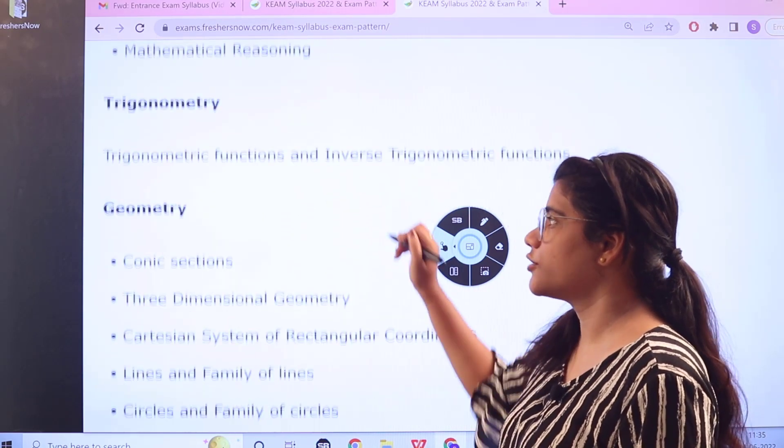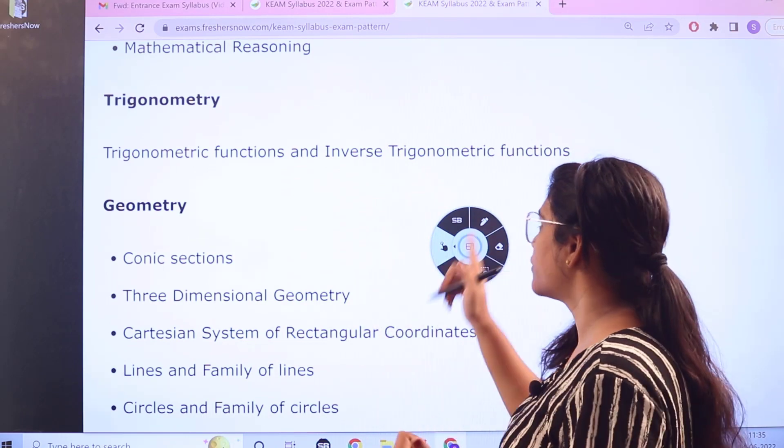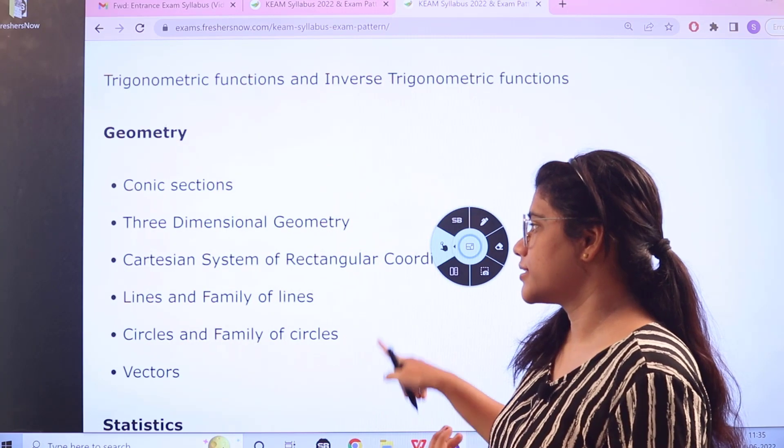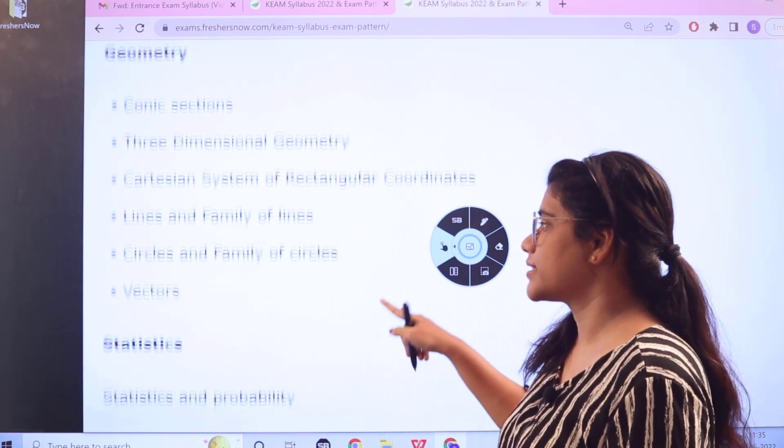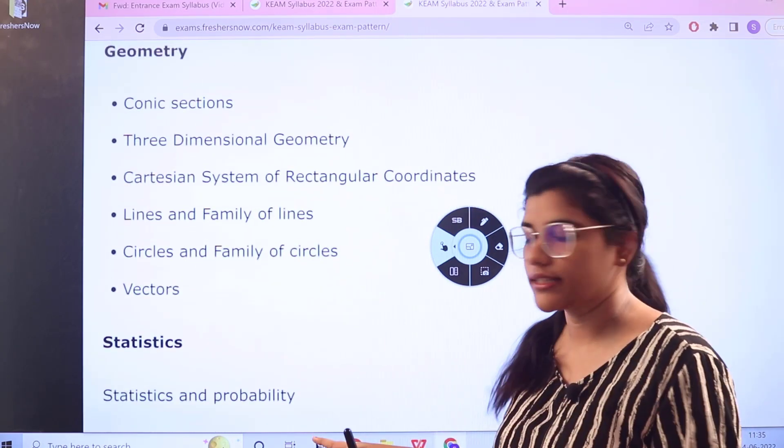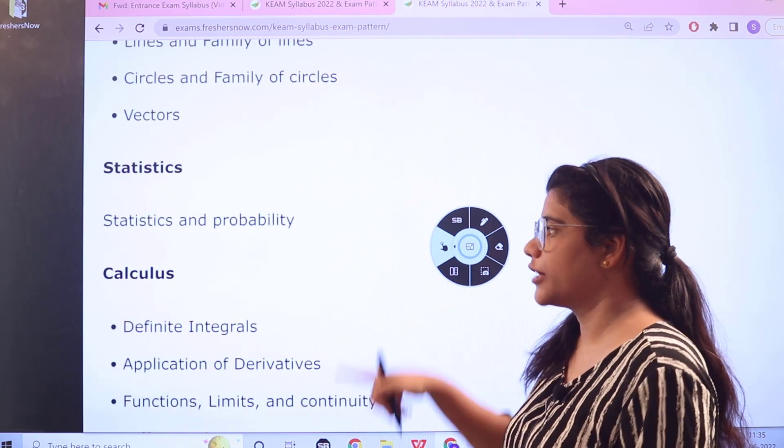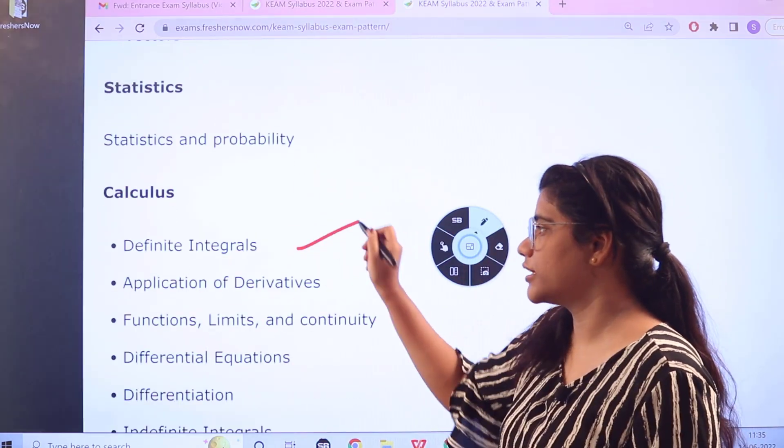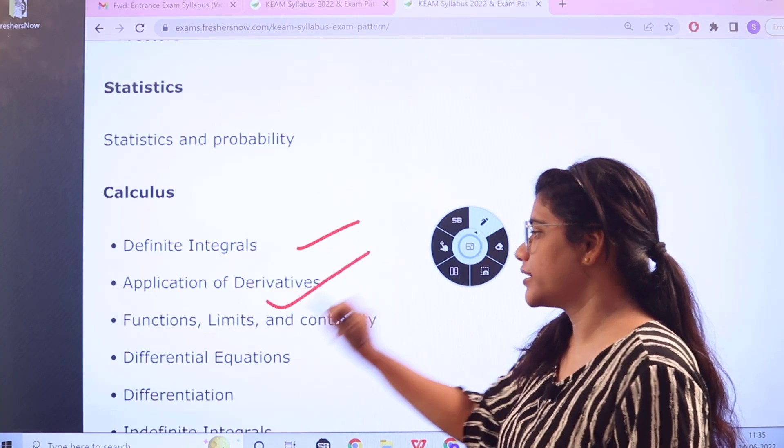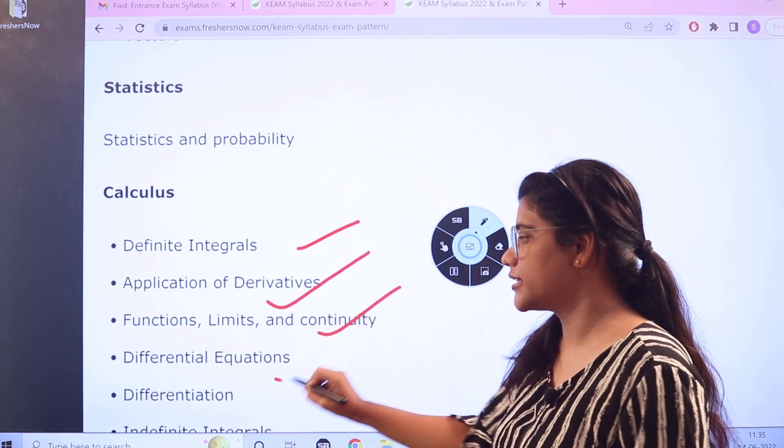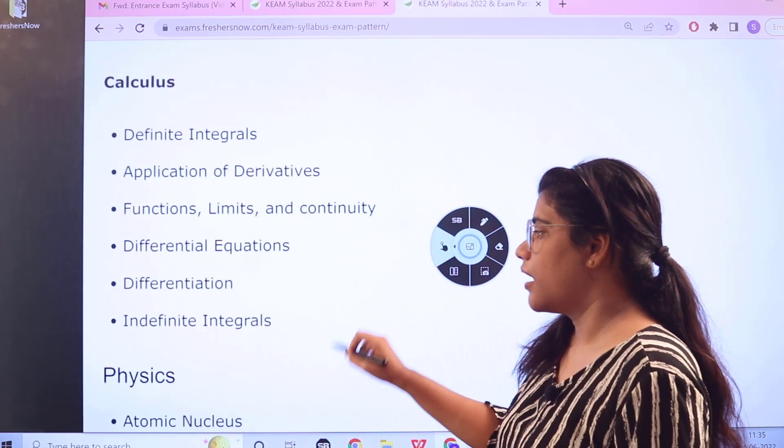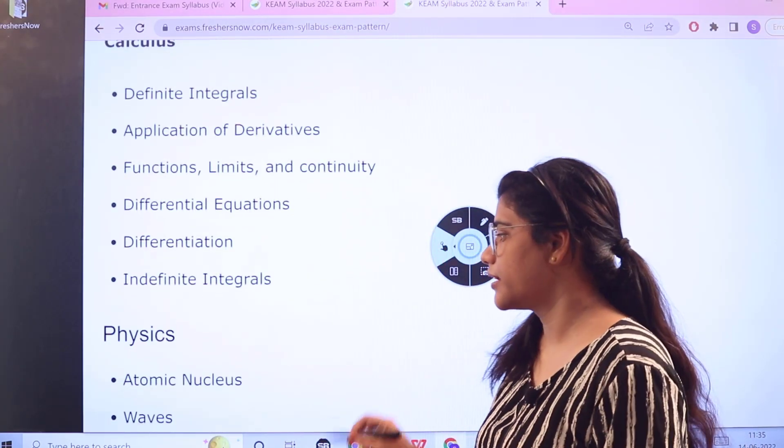For trigonometry you have trigonometrical functions, inverse trigonometric functions. For geometry you have three-dimensional geometry, Cartesian systems and lines, and family of lines, circles, vectors, and conic sections. For statistics you have statistics and probability. For calculus you have differentiation, integrals, applications of derivatives, functions, limits and continuity, differential equations, differentiation, then indefinite integrals.